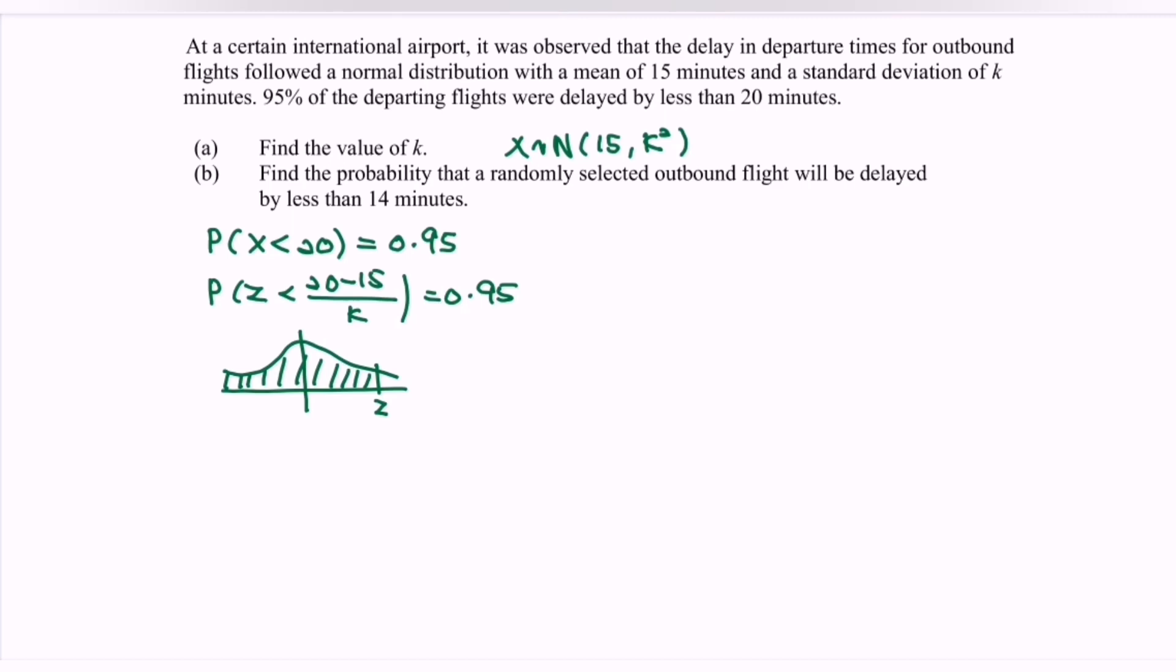So rewrite the formula. We have 1 minus probability that z greater than (20 minus 15 over k) equals 0.95. At the same time, simplify the situation. So probability that z greater than (5 over k) equals 0.05.